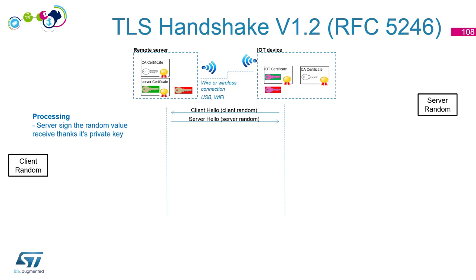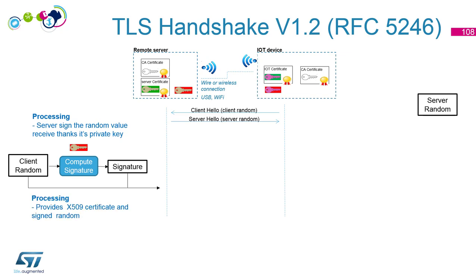Next, the server signs the random value it received using its private key — remember, signatures are always done with a private key. Then it provides its certificate, meaning the server's public key, along with the signed random.